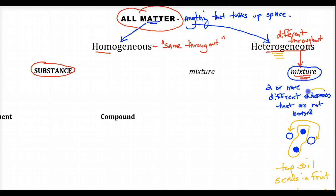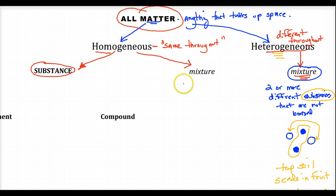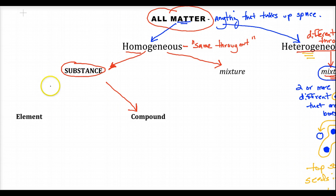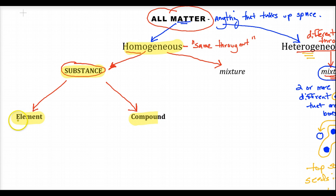Now I mentioned the word substance. All matter is either heterogeneous or homogeneous. Homogeneous matter can either be a substance or a mixture. A substance, by definition, is either a compound or an element, and it is always homogeneous. So if you've got a compound or an element, it's the same throughout.